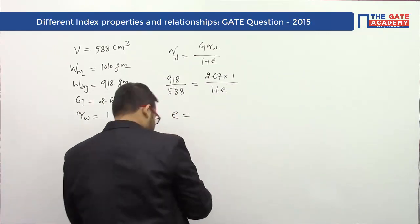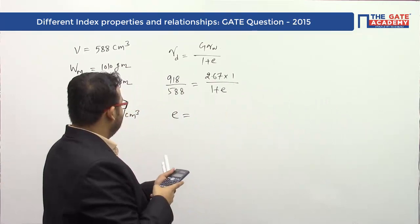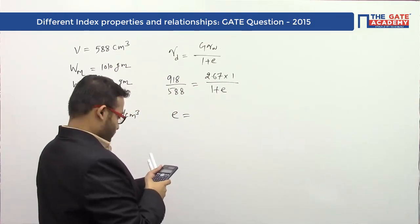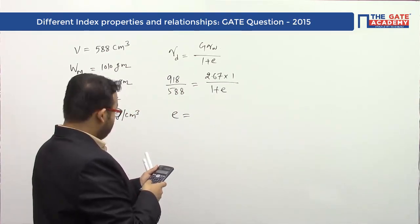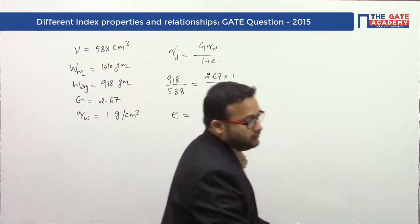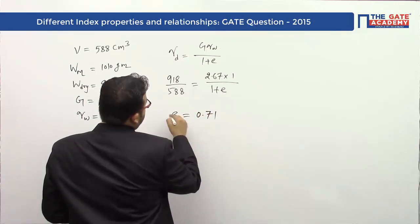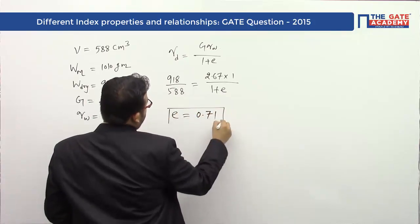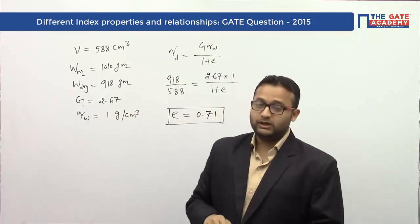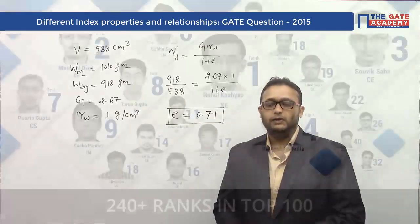From this equation we can calculate e. The value of the void ratio comes out to be 0.71. So the answer is 0.71. It was a very easy problem asked for two marks in GATE 2015. Thank you.